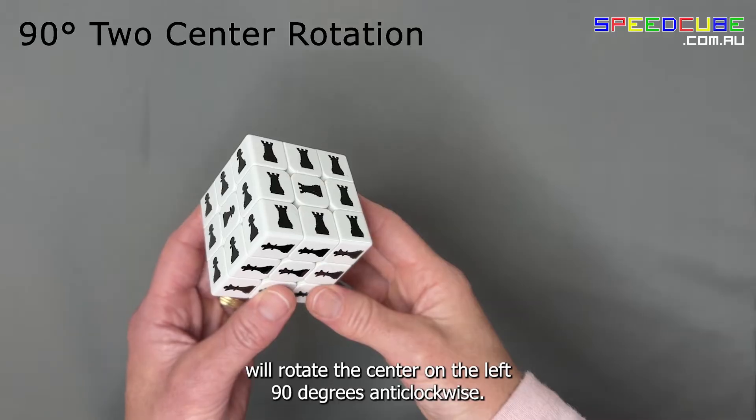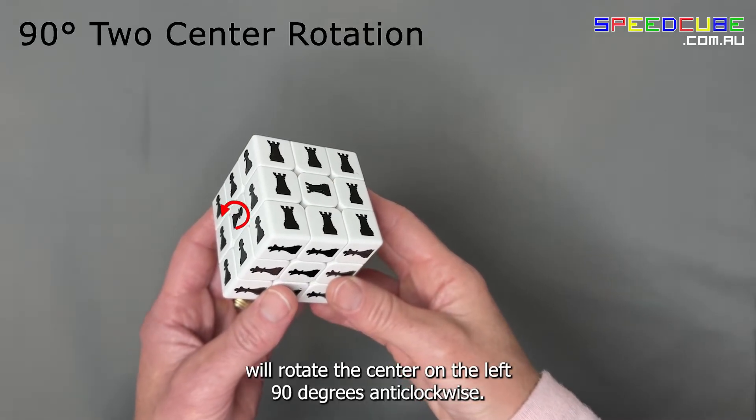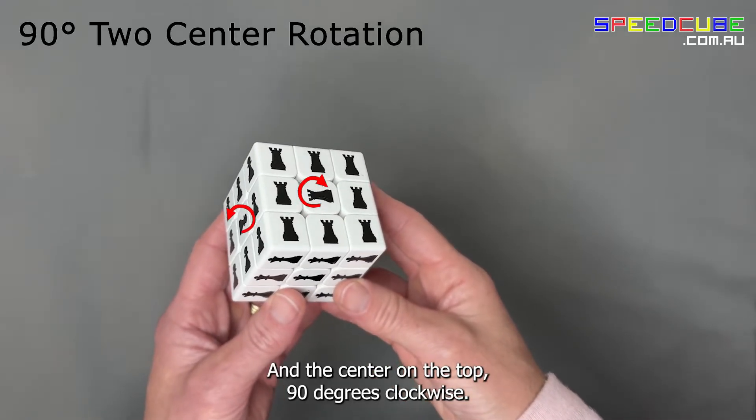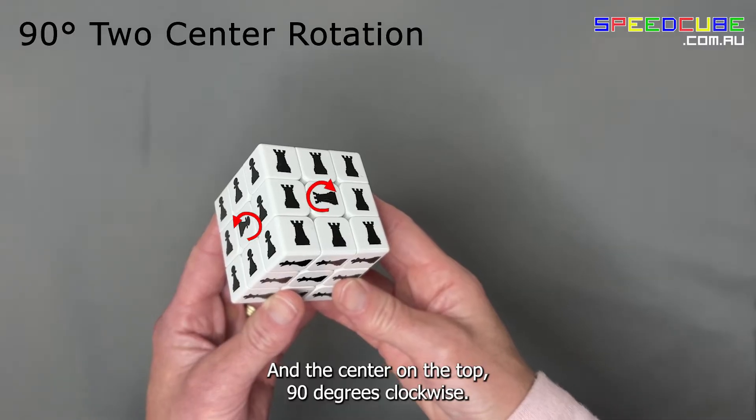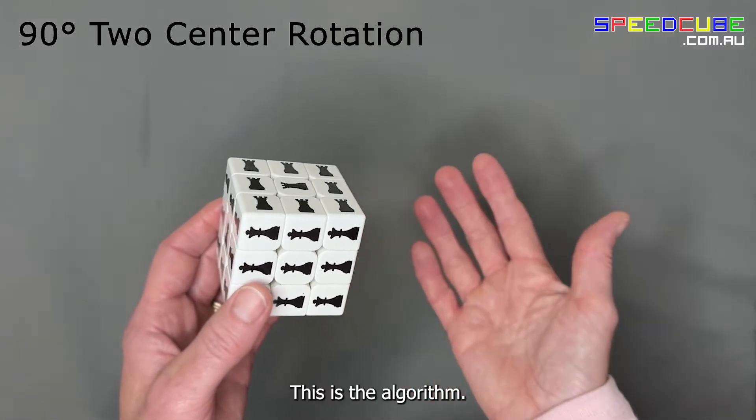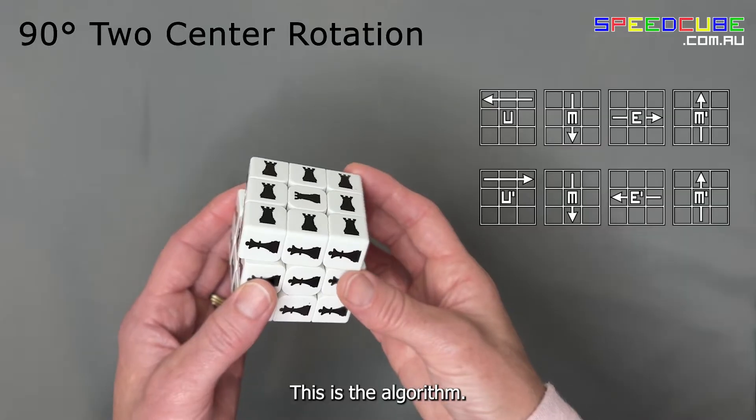The next algorithm will rotate the center on the left 90 degrees anticlockwise and the center on top 90 degrees clockwise. This is the algorithm.